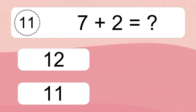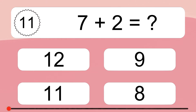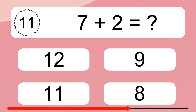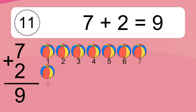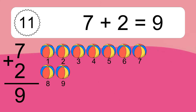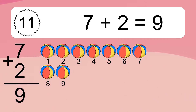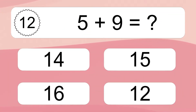7 plus 2 equals what? 7 plus 2 equals 9. Let's count it: 1, 2, 3, 4, 5, 6, 7, 8, 9.